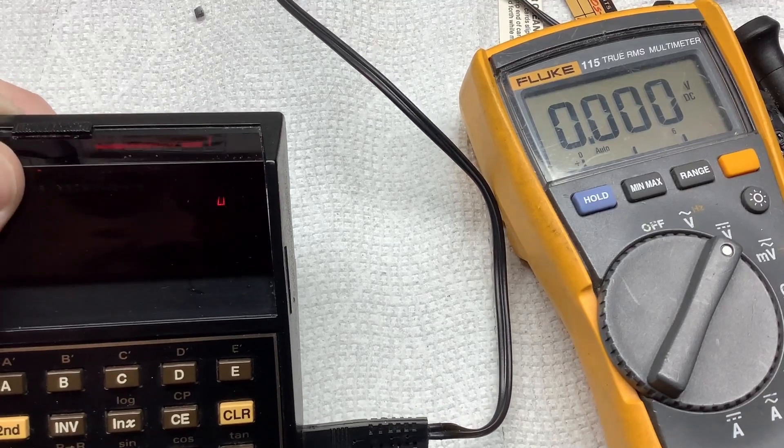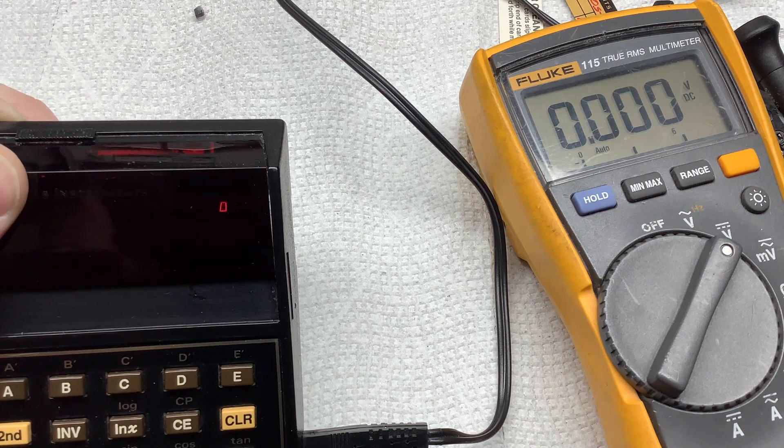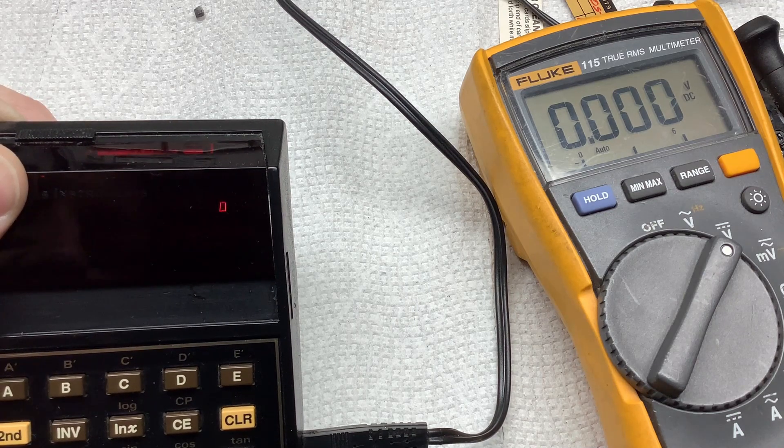All right, so I've got a 59 that's not reading properly suddenly. It has a bad cap and I thought I'd go over how to diagnose that.